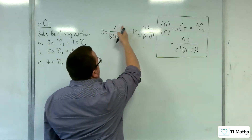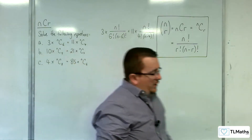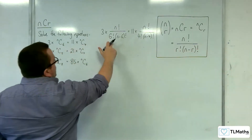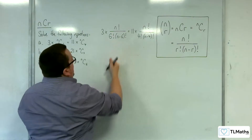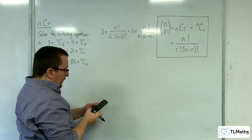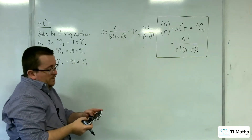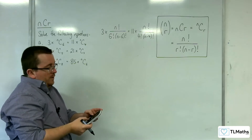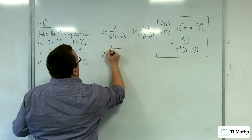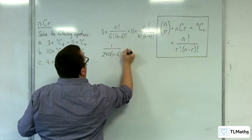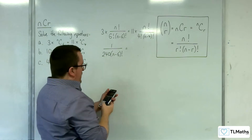The first thing I would do is recognize that we've got n factorial on both sides, so we can divide both sides by n factorial. We can also deal with 6 factorial and 4 factorial by rewriting them. Simplifying: 3 divided by 6 factorial — you can use the factorial button on your calculator (shift above the x⁻¹ button) — gives 1 over 240. So we get (1/240) over (n minus 6) factorial equals (11/24) over (n minus 4) factorial.